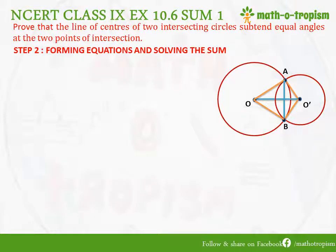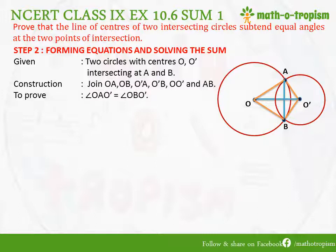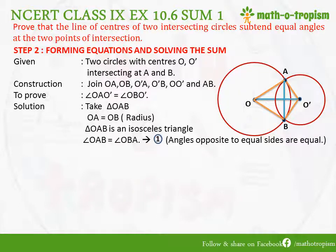Now proceeding with the formal solution: given two circles with centers O and O' intersecting at A and B. Construction: join OA, O'A, OB, O'B, AB, and OO'. We need to prove angle OAO' equals angle OBO'. In triangle OAB, OA equals OB (both radii), so angle OAB equals angle OBA, since angles opposite equal sides in an isosceles triangle are equal. — (Equation 1)